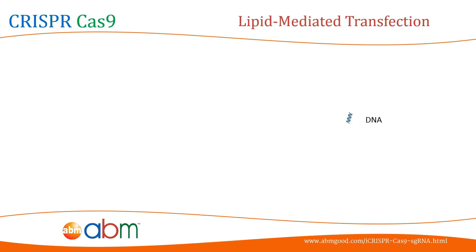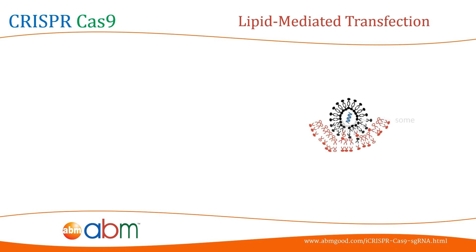Lipid-mediated transfection involves the use of cationic lipids or cationic polymers. The negatively charged phosphates of the DNA backbone associate with these positively charged lipids or polymers, forming a complex called a liposome. The liposomes, which are essentially vesicles containing the exogenous DNA, can then merge with the cell membrane and release their content inside the cytoplasm.